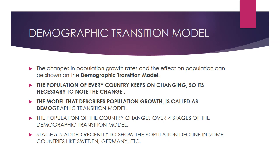This model basically has four stages, but in some countries a fifth stage is also used. The population of a country changes over four stages, and the fifth stage was added recently to show population decline in some countries. Countries like Germany and Sweden have a decline in their population ratio, which is why the fifth stage is also added.